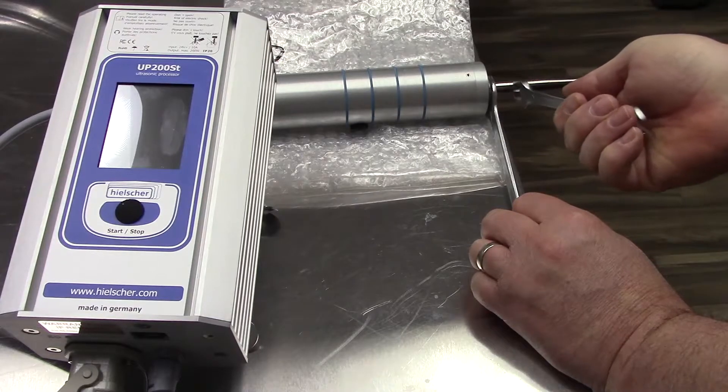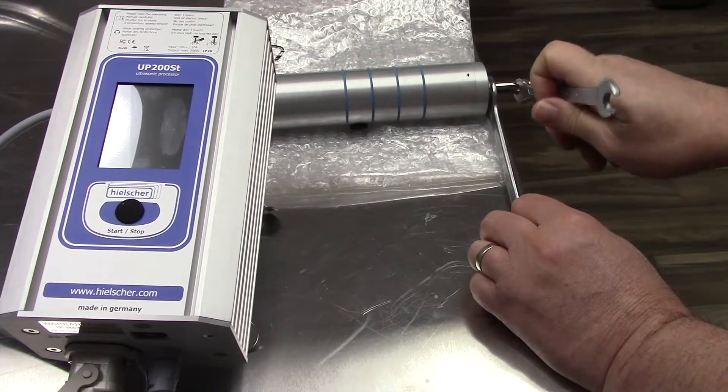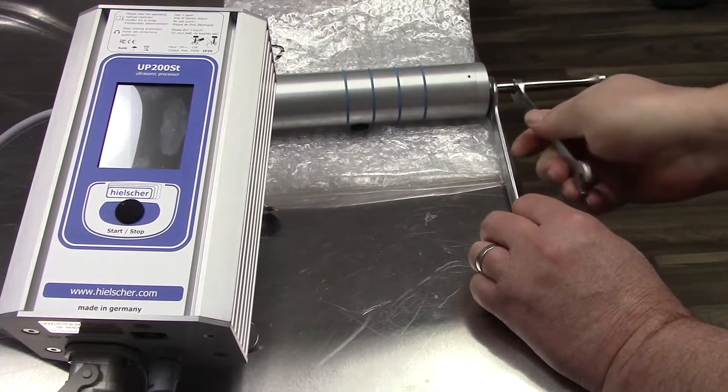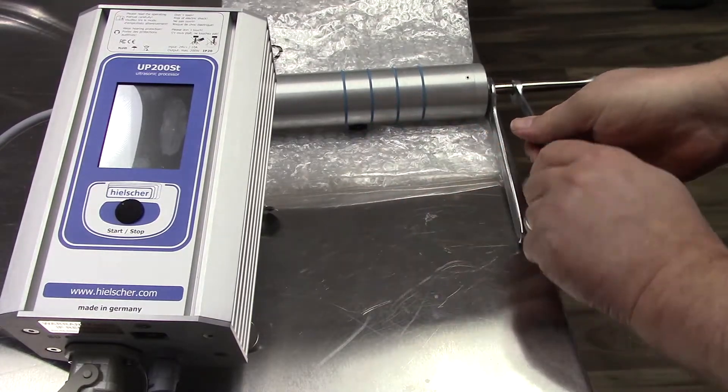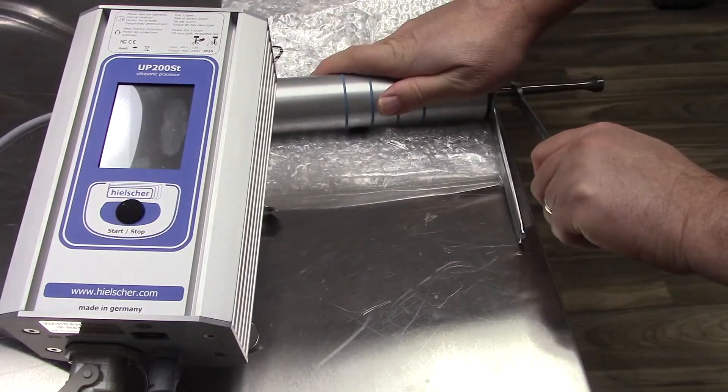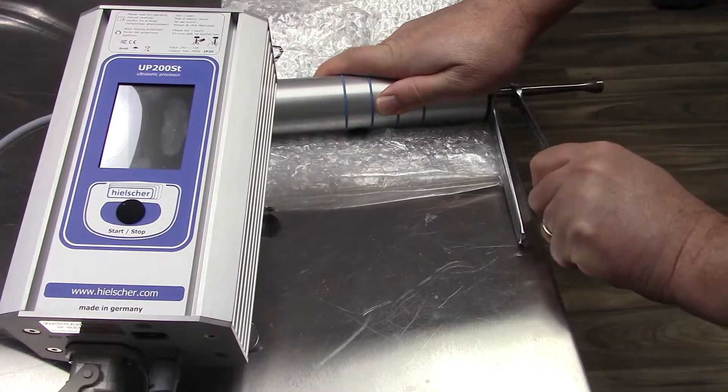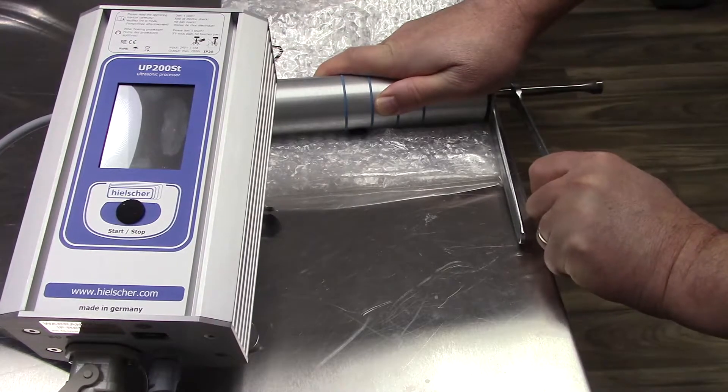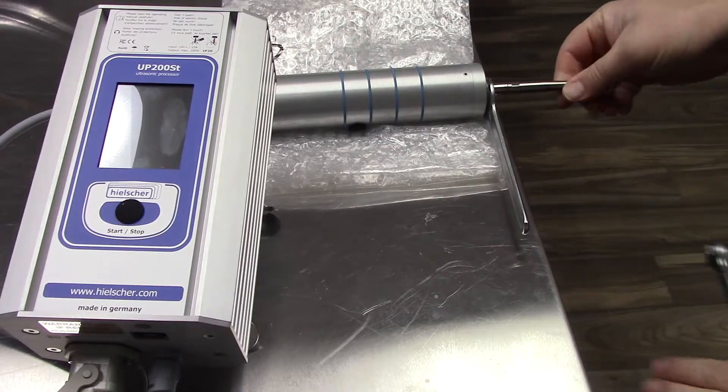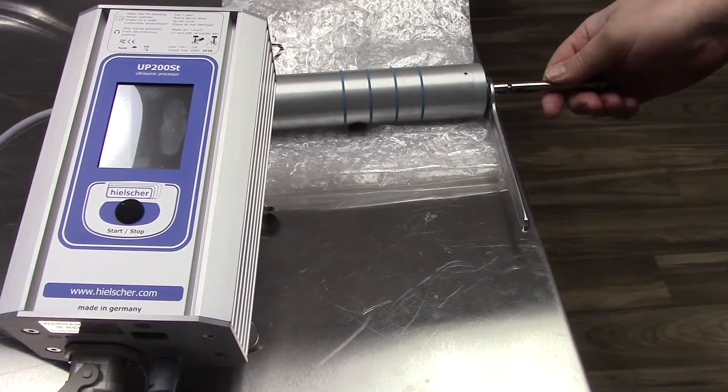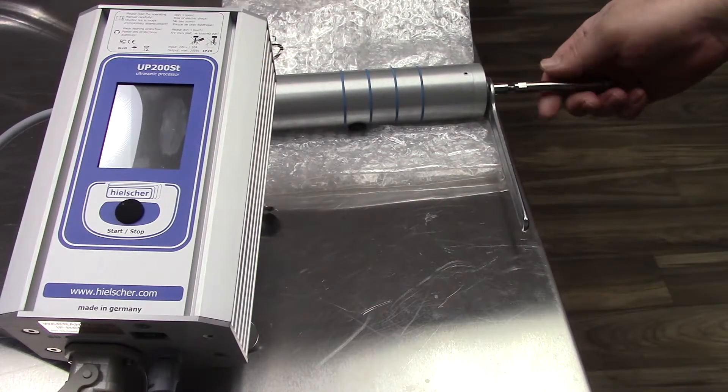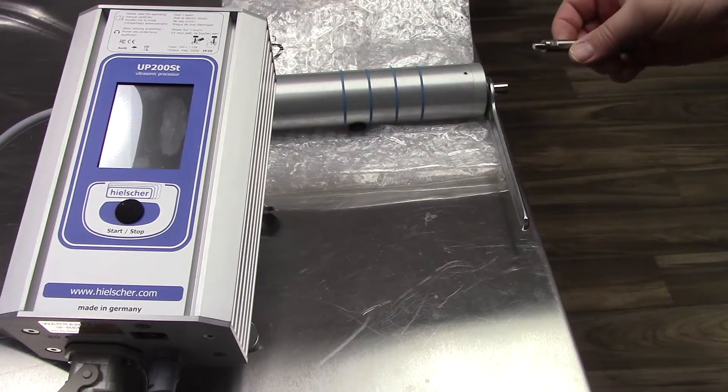Position the second wrench, and holding the instrument, turn counterclockwise, and you should hear a pop. Continue to dismount the sonotrode by turning it counterclockwise.